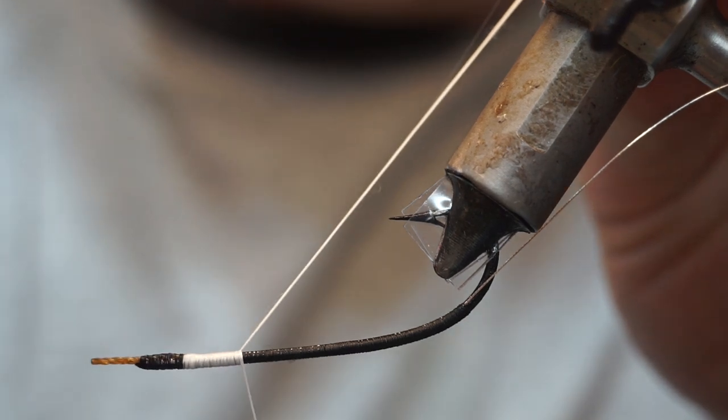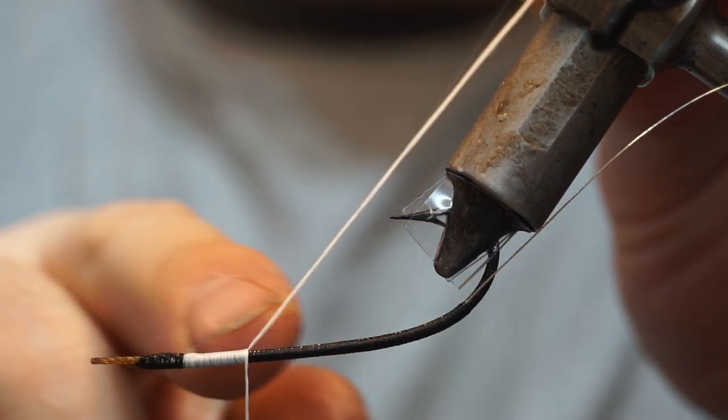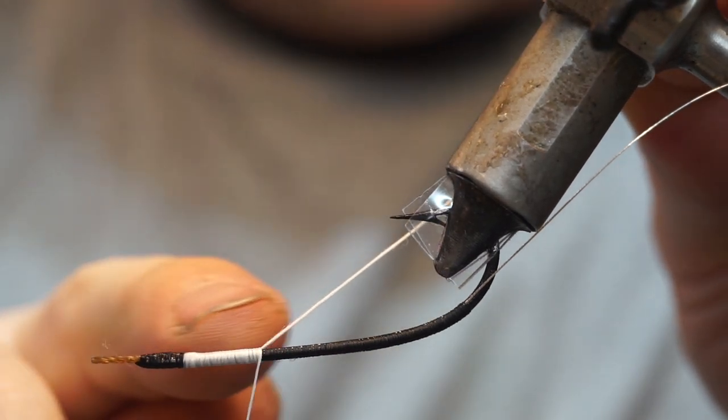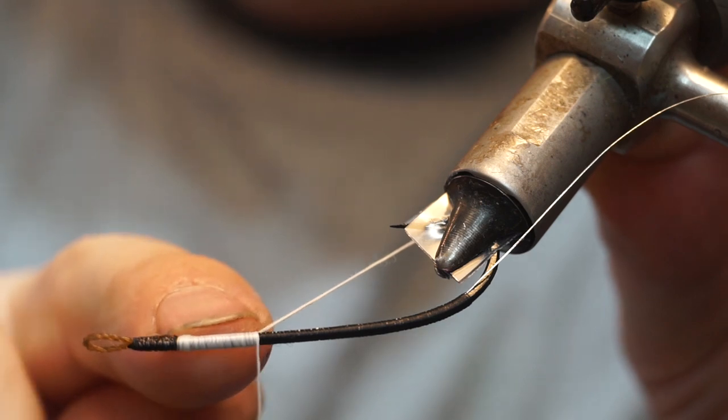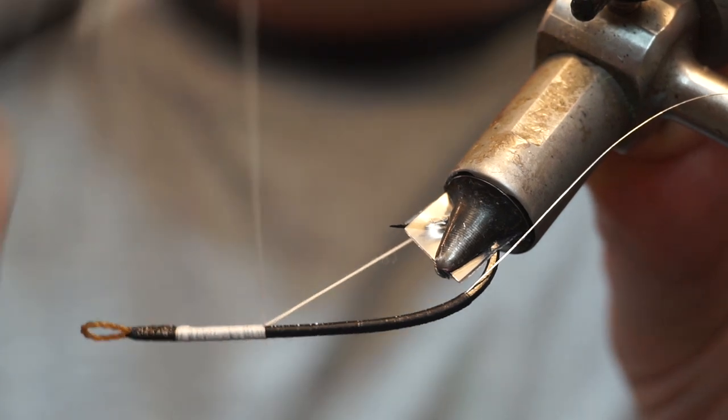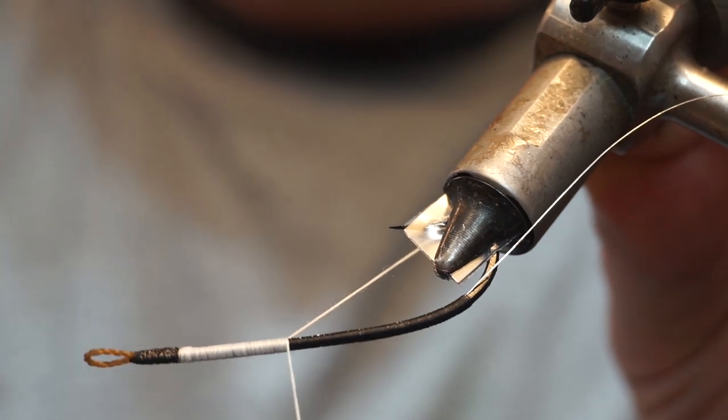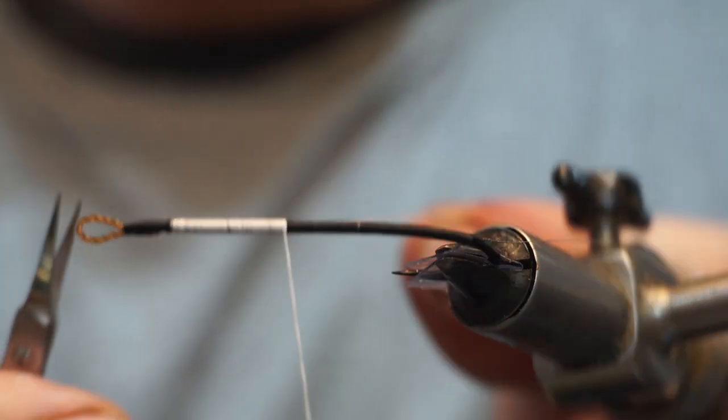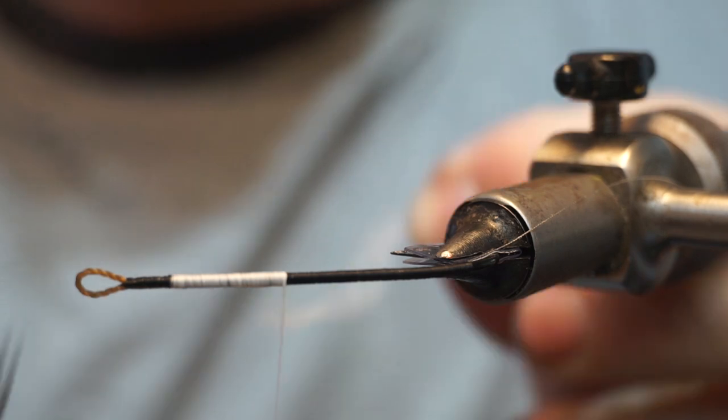You can see I'm holding this up and wrapping backwards. Now the thickness of this going back may not seem like a lot, but it's just helping to balance out the step to the gut. I'm going to get about halfway down there and I'm going to hold this under tension and just cut it off.